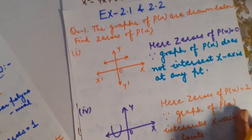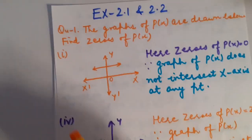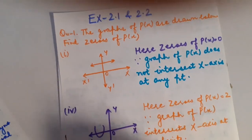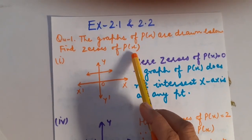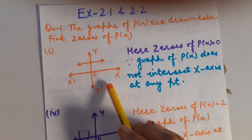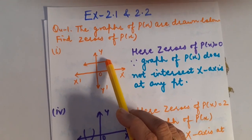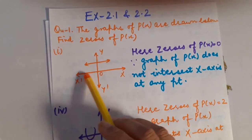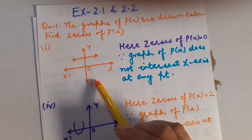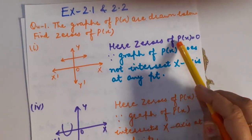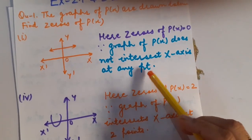Now, on the basis of this, I am going to take questions from exercise 2.1. You will be having graphs given — you have to just tell me how many zeros the polynomial has. In this graph, you can see it is the graph of a straight line, so it is a linear polynomial. But this linear polynomial is not going to intersect the x-axis at any point. So the zeros of this polynomial will be 0 — because the graph of P(x) does not intersect the x-axis at any point.